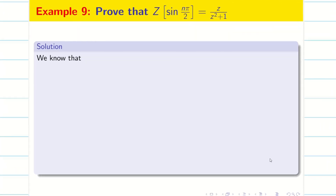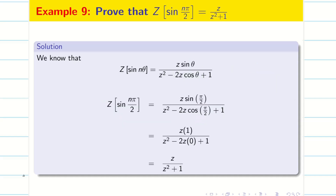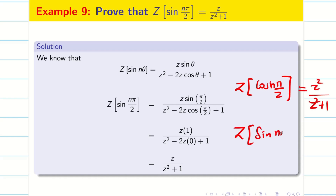For Z of sin(nπ/2): using the same formula, sin(π/2) = 1 and cos(π/2) = 0. Wherever we have sine we get 1, and the cos term becomes 0. So the answer is Z divided by (Z² + 1). Remember for MCQ: Z of cos(nπ/2) is Z² / (Z² + 1), and Z of sin(nπ/2) is Z / (Z² + 1). If it is a part B question, derive it; if it is MCQ, just remember the formula.